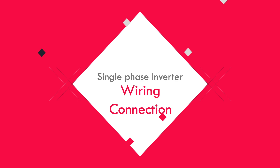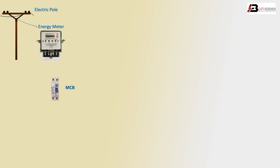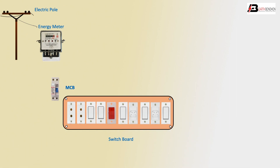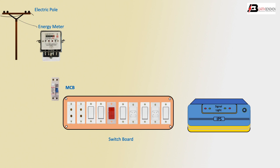Hello viewers, today I discuss the single-phase inverter wiring connection. Let's get started. I explain the first electric pole, energy meter, MCB, and switchboard. The switchboard components include two sockets, five switches, or an integrated one-piece unit. The dimmer connection goes from the electric meter to the IPS connection, meaning inverter connection with automatic control for light and fan.